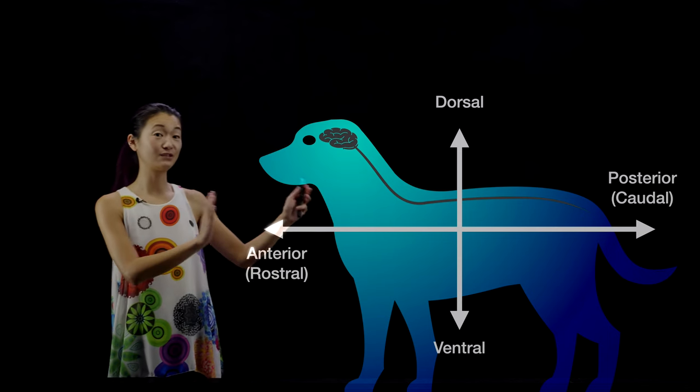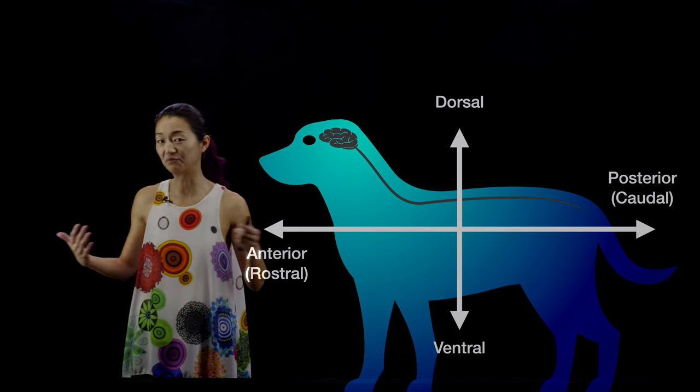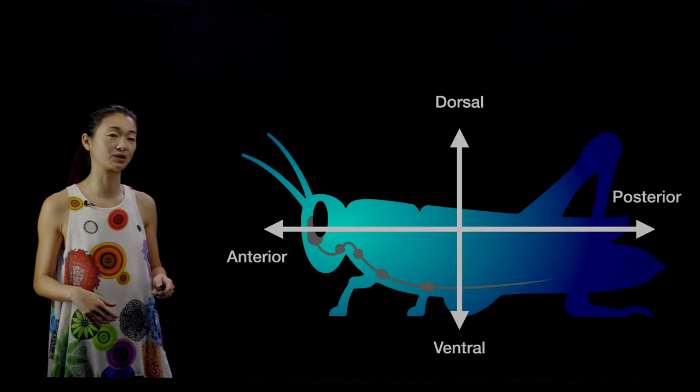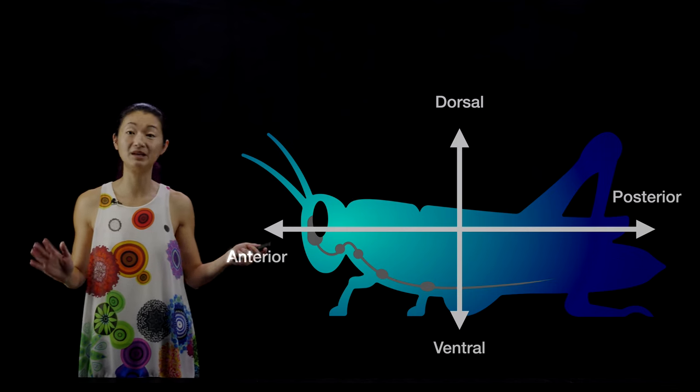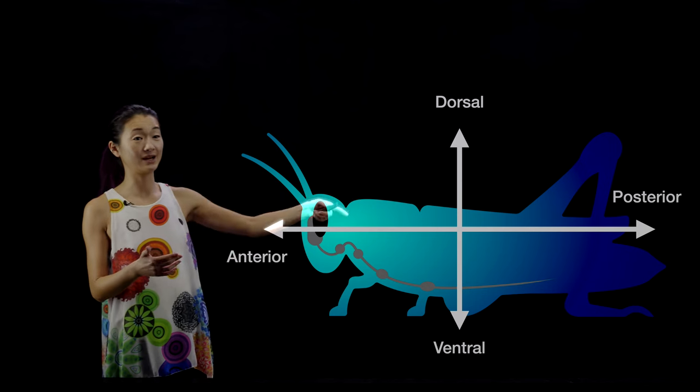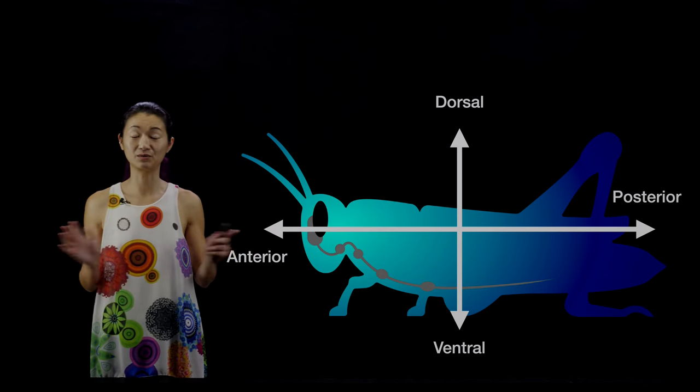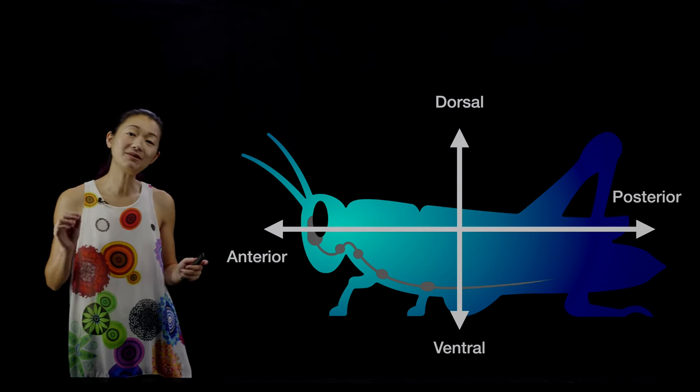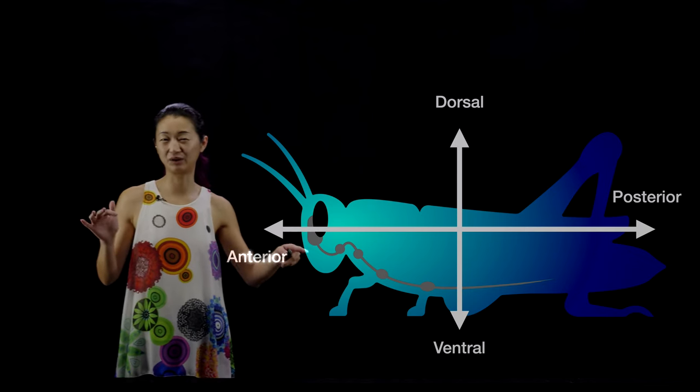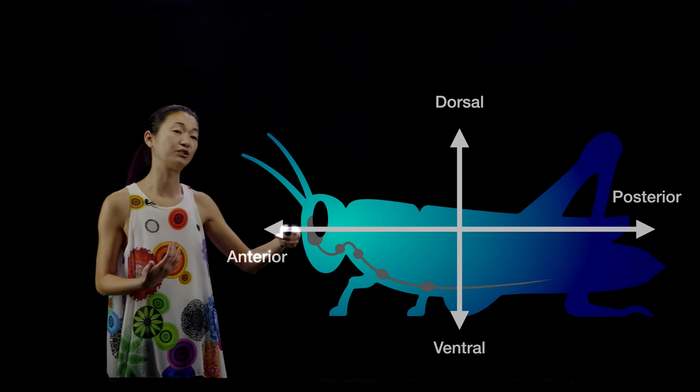The same thing applies, these four words and axes apply anytime you have a reasonably bilaterally symmetric animal. These axes work perfectly well if you're talking about invertebrate insects, for example. Here we have a cricket. It has an AP axis and a DV axis, just like our dog did, with exactly the same words and meanings. It even has a very analogous system in its central nervous system with a brain which is in its head.